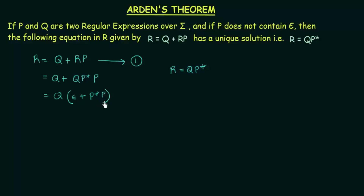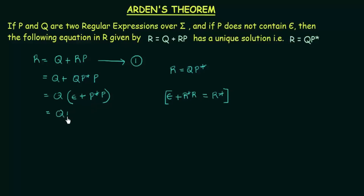Now, if you remember in the previous lecture when we studied about identities, we already studied that epsilon + r*r, where r is a regular expression, is equal to r*. This was one of the identities from the previous lecture — you can refer to it if you have not watched. Here in the same way, we have epsilon + p*p, so this whole thing can be written as p*. So we get qp*. We have just proved that r = qp* is a solution to this equation, completing the first part of Arden's Theorem.